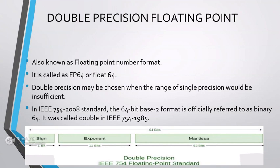In the IEEE 754-2008 standard, the 64-bit base-2 format is officially referred to as binary64. It was called double in IEEE 754-1985. As you can see in the figure, the total bits is 64: 1 bit is assigned for sign, 11 bits for exponent, and 52 bits for mantissa.